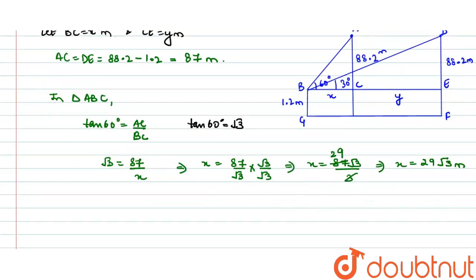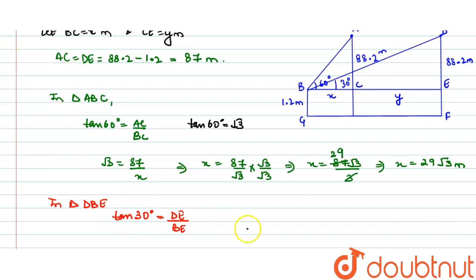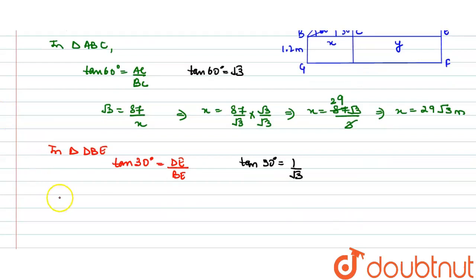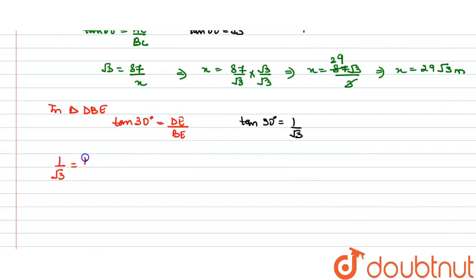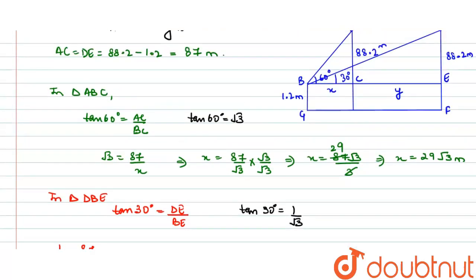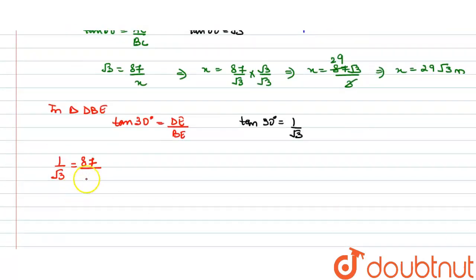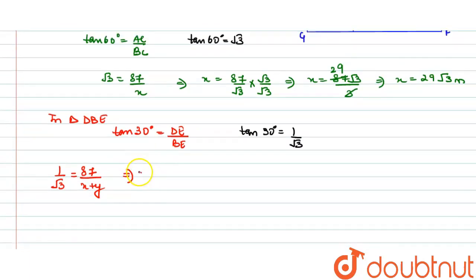Now in triangle DBE, tan(30°) = DE / BE. Since tan(30°) = 1/√3, we have 1/√3 = 87 / BE. Here BE = BC + CE = x + y, so x + y = 87√3.